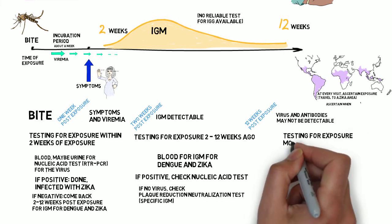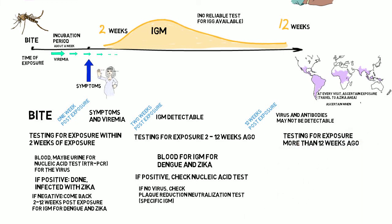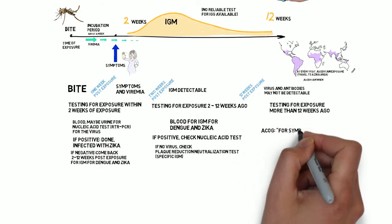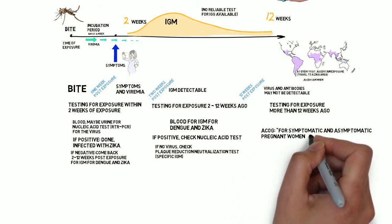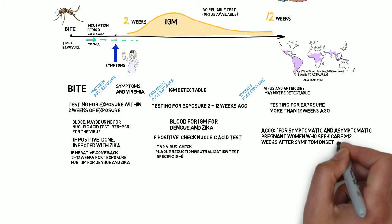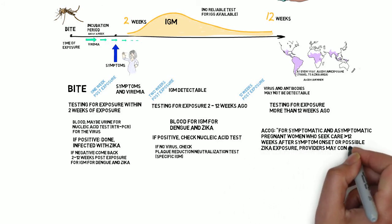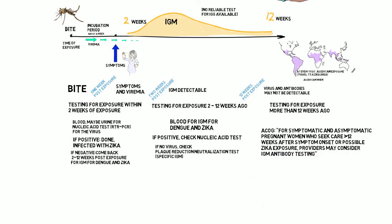After 12 weeks, both IgM and nucleic acid tests may be negative and therefore not be able to rule out infection. According to ACOG, SMFM, and CDC, for symptomatic and asymptomatic pregnant women who seek care greater than 12 weeks after symptom onset or possible Zika virus exposure, providers may consider IgM antibodies. This has been inconsistent, with testing sometimes not recommended because interpretation of results after 12 weeks is difficult. However, a patient who presents at 19 weeks with a possible exposure at 6 weeks is interested in knowing whether the IgM is positive, and since the practice advisory specifically states the provider may consider IgM testing after 12 weeks, I would push for that.